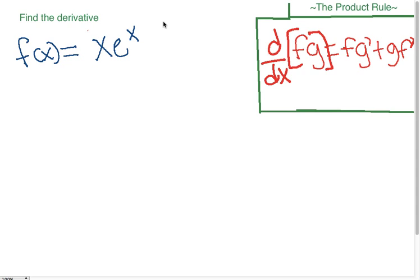So we know our f, so f times g. The first function we have is x and our second function is g equals e to the x power.